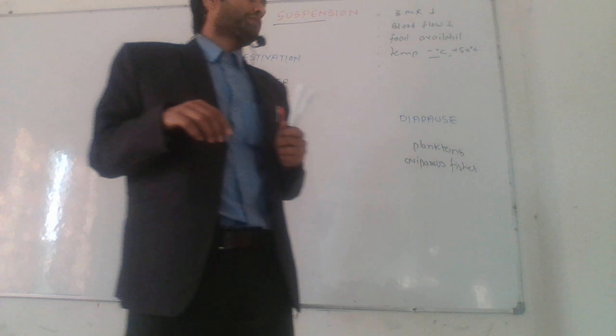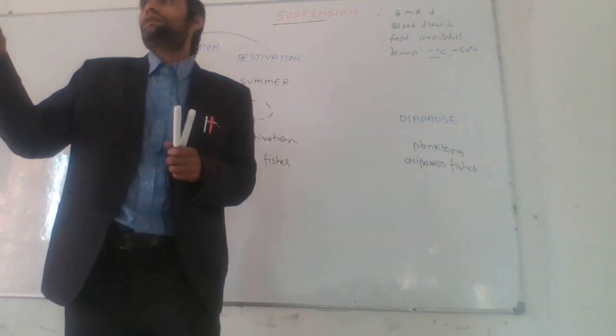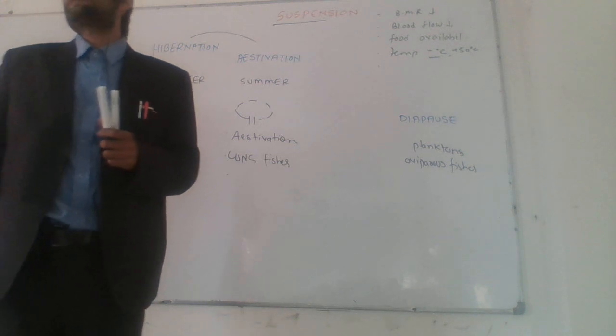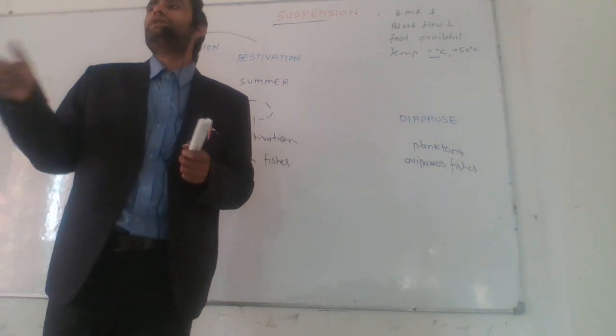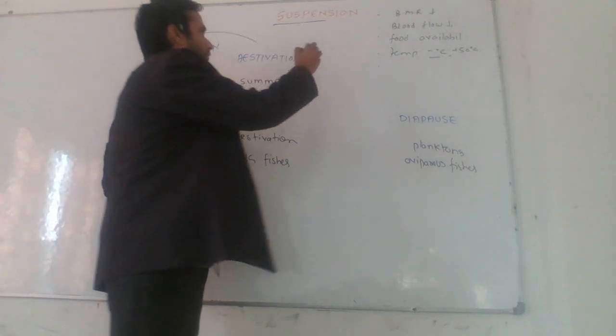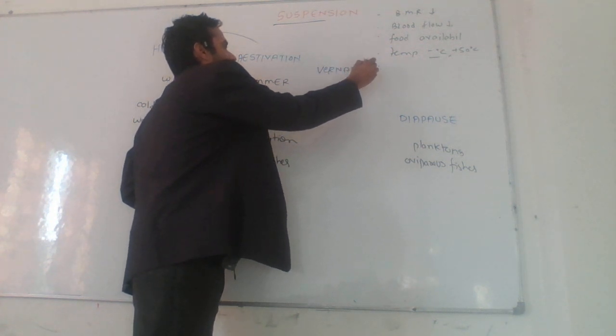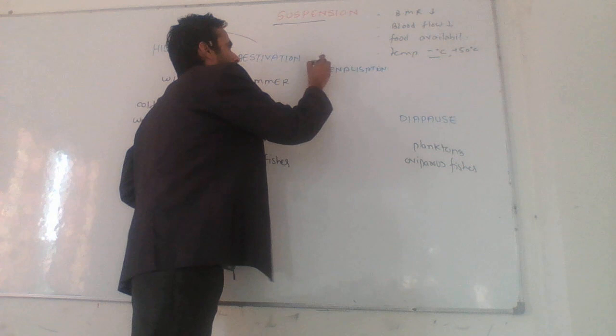In the diapause, like seed goes into the dormant stage. Seed will not germinate. Before germination, we give the cold treatment. That is known as vernalization. That is the cold treatment before the seed dormancy.